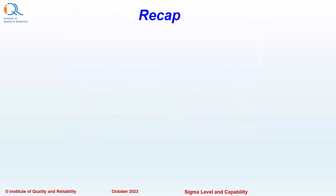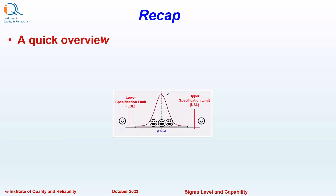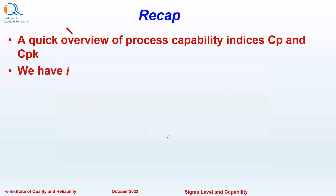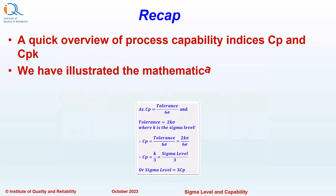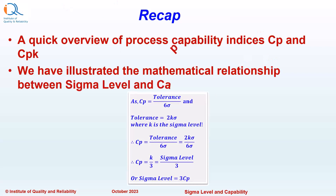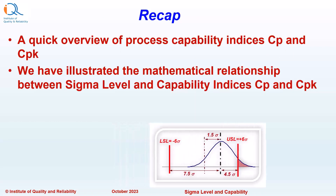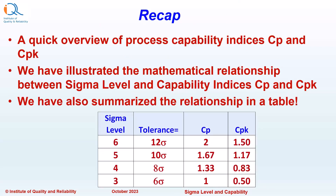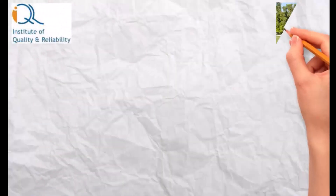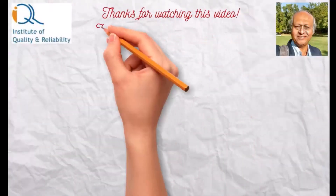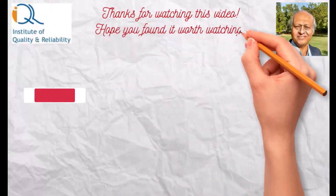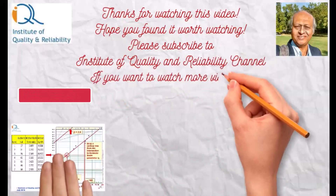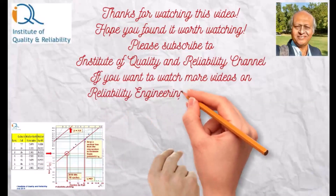Let us do a recap of the video. We have seen a quick overview of process capability indices CP and CPK. We have illustrated the mathematical relationship between Sigma Level and capability indices CP and CPK, and summarized the relationship in a table. Thank you for watching this video — hope you found it worth watching. Please subscribe to the Institute of Quality and Reliability channel if you want to watch more videos on Reliability Engineering, Six Sigma, and Quality Engineering.